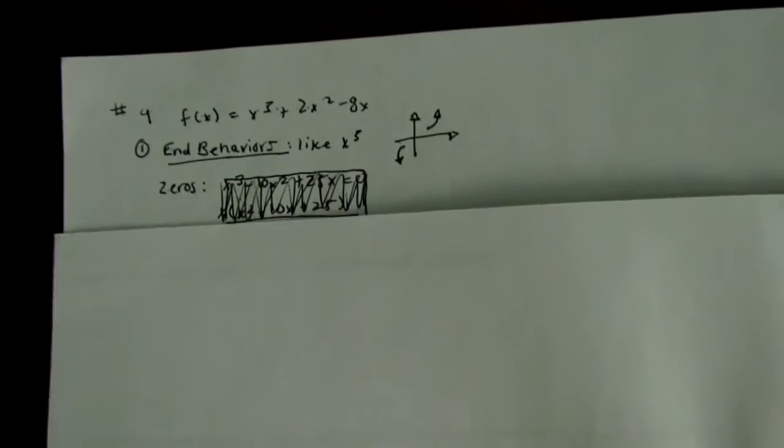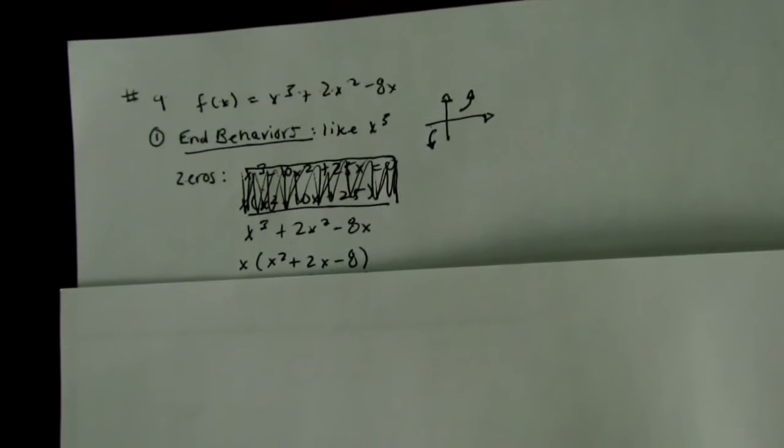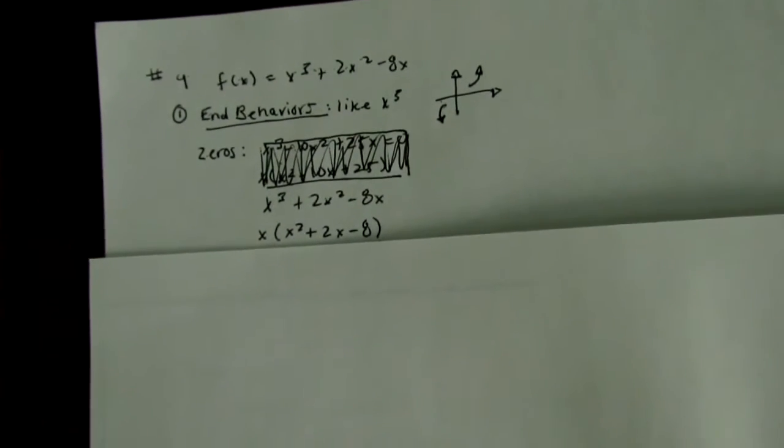Next, we will find the zeros. So, x³ + 2x² - 8x should equal zero. I forgot to write that.